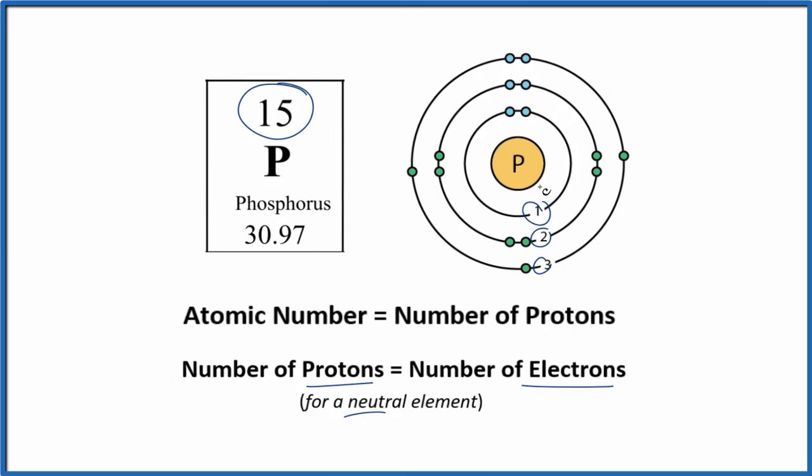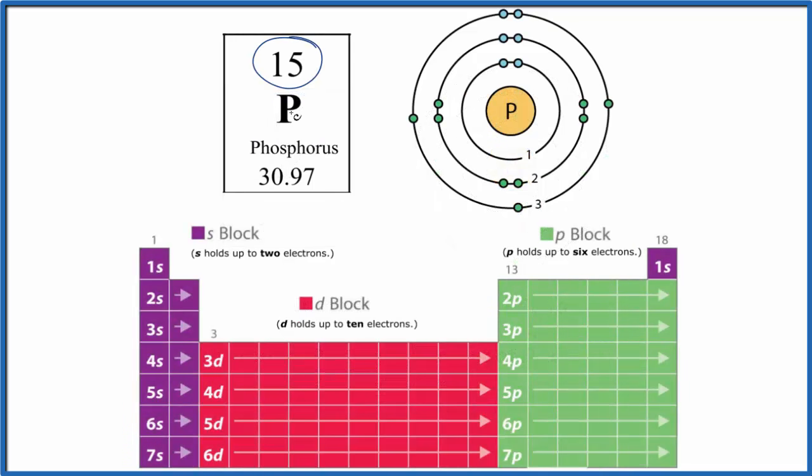Let's use the periodic table to help us do that. So we have 15 total electrons to put around the nucleus. We go to the periodic table, period 1, that's the first energy level here. It can only hold 1 and 2, then it's full. So here are the 2 electrons we have in that first energy level.